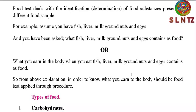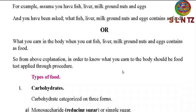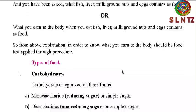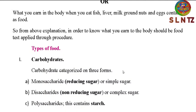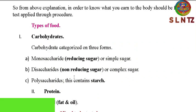Before looking at the food test procedures, let us have an introduction on what types of food we are going to test. First is carbohydrate, which is categorized in three forms: number one, monosaccharides — also called reducing sugar or simple sugar; number two, disaccharides — also called non-reducing sugar or complex sugar; and number three, polysaccharides — which contains starch.